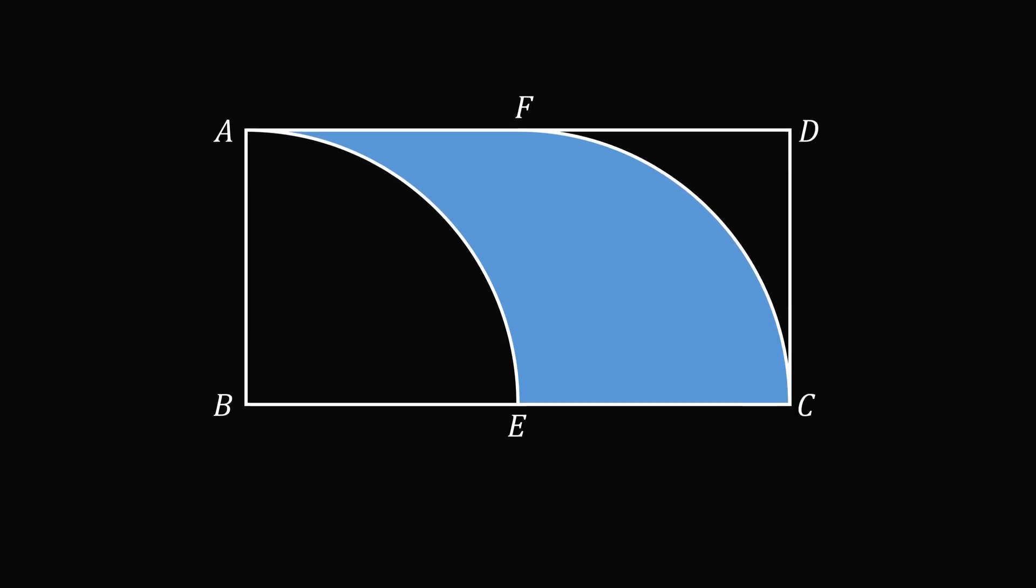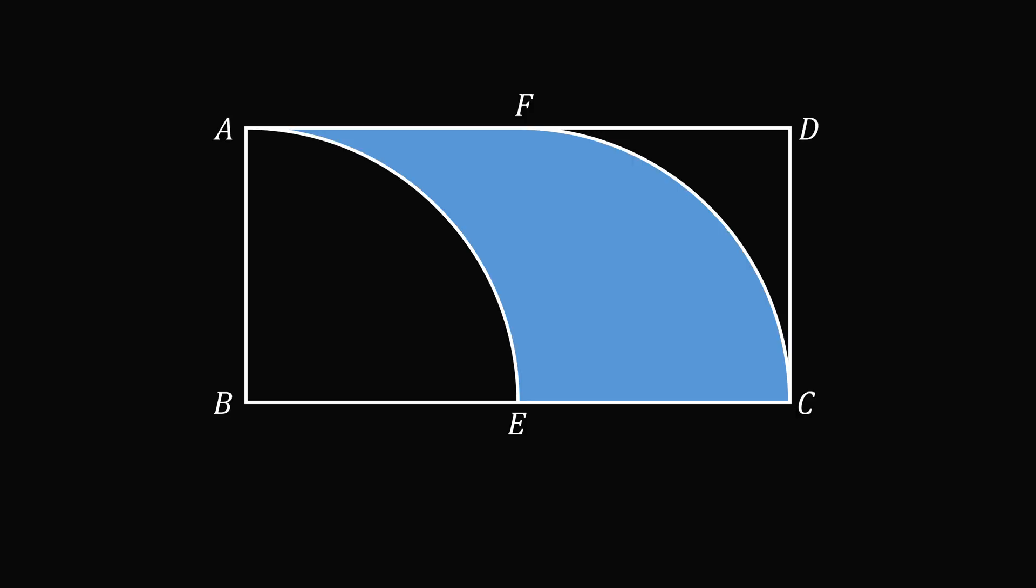This looks like a very challenging problem, but there is a simple way to solve it. First construct EF. Then notice that the region AFE is exactly congruent to the region FDC by construction of the quarter circles.